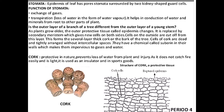Suberine is the chemical that cork cells are made up of, and it makes them impervious to gas and water. What is the nature of cork? Cork is protective in nature. It prevents loss of water. It prevents mechanical injuries to plants. It does not catch fire easily and it is light-weighted. That is why it is also used as an insulator and in sports goods. The cells here are the ruptured epidermis.